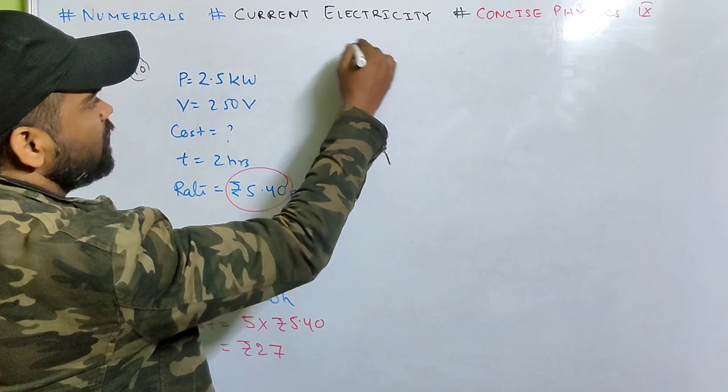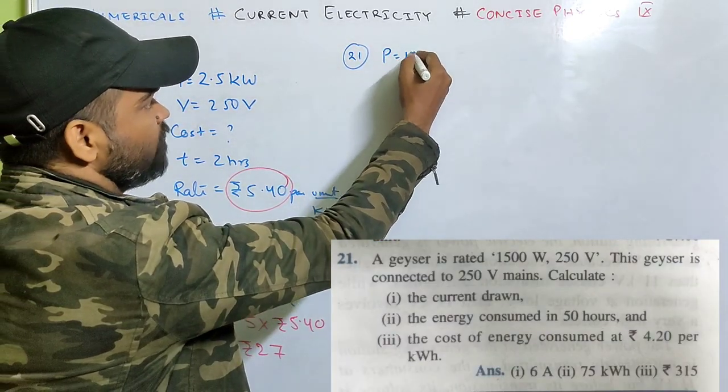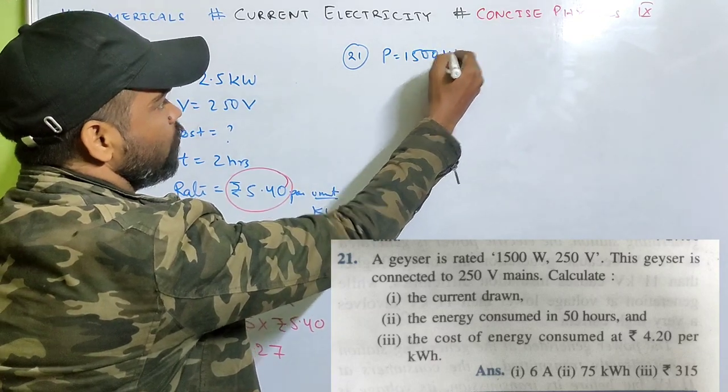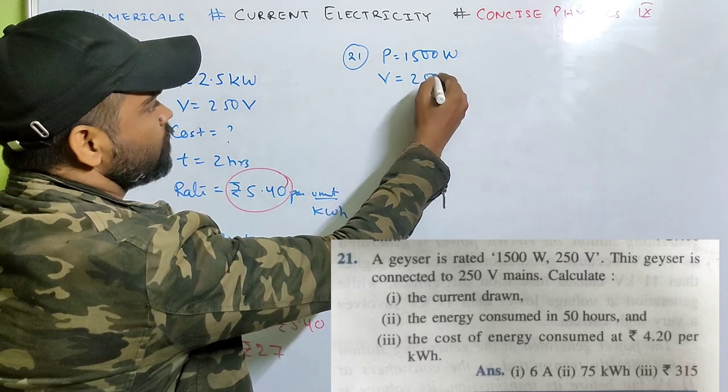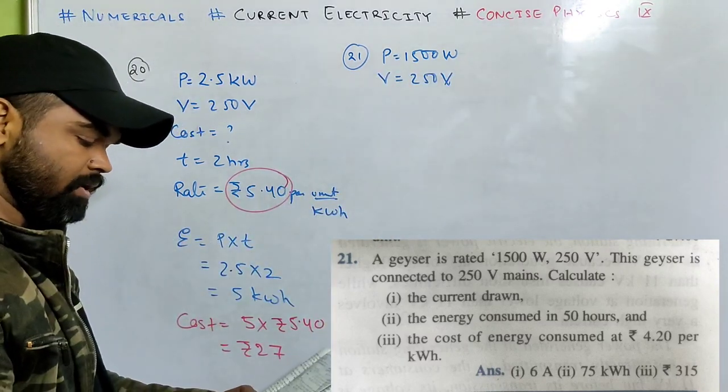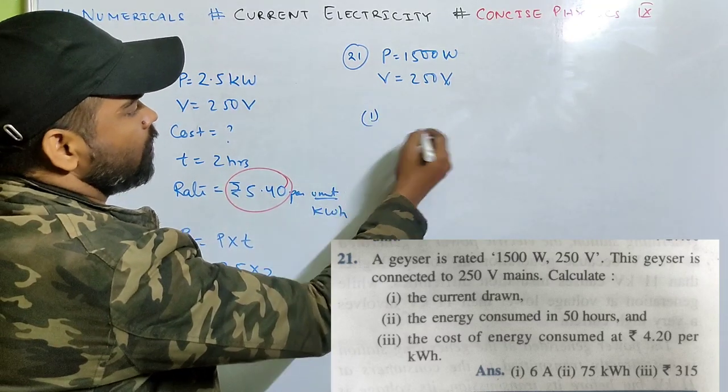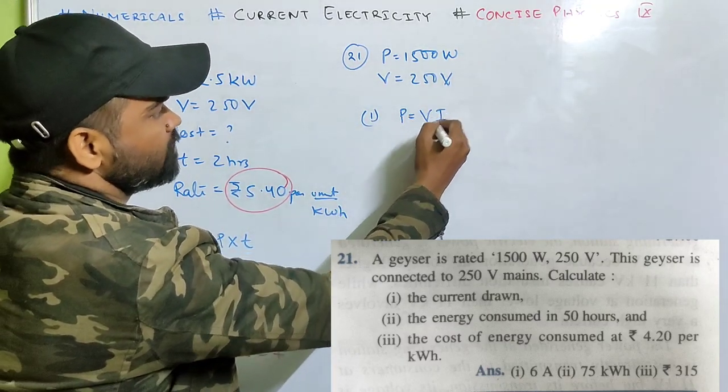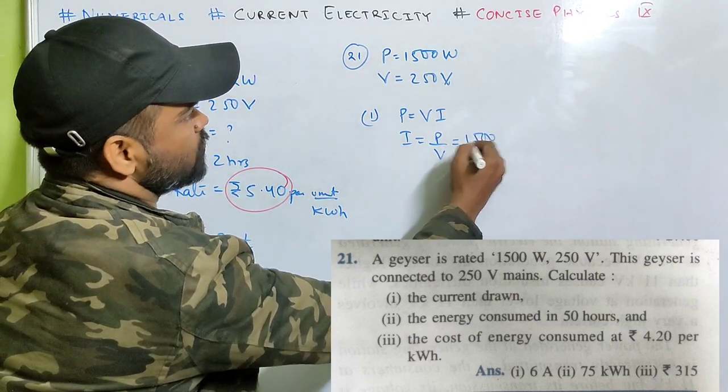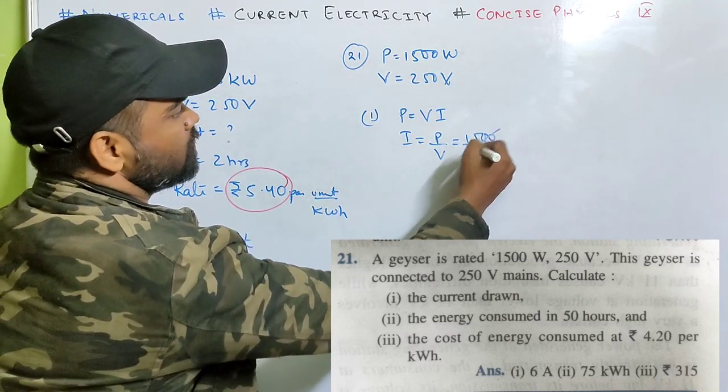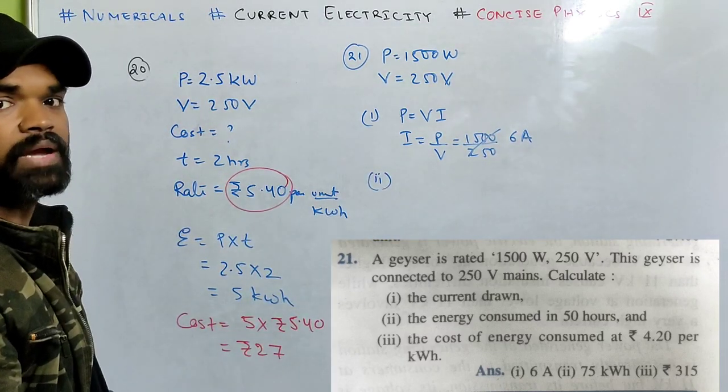Problem 21. A geyser is rated 1500 watt, 250 volt. The geyser is connected to 250 volt mains. Calculate the current drawn. P equals V I, so I is P by V, that's 1500 by 250, which equals 6 ampere. Very easy - power equals V I.